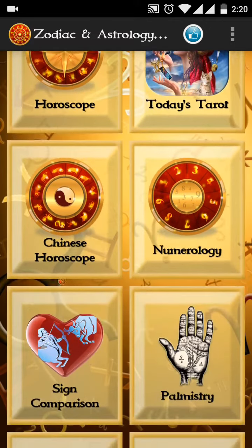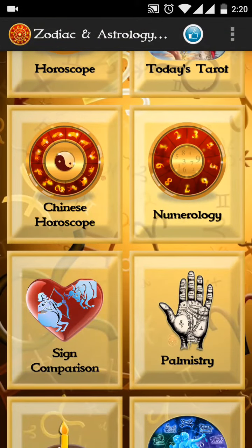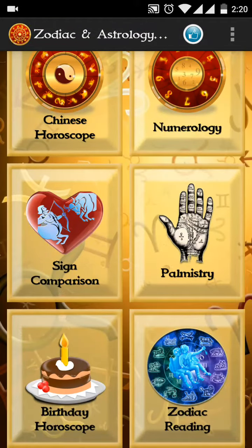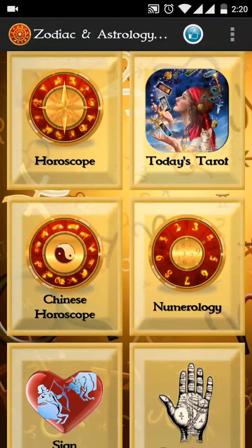There are a lot of features in this app: we have horoscope which is daily, weekly, monthly, and yearly, depending on the 12 different zodiac signs. We have tarot card reading where you can select one tarot card every day. We have Chinese horoscope, numerology, sign comparison where you can compare your sign with your partner's sign and see how compatible you are. We have palm reading, birthday horoscope, and general zodiac reading where you can read about your personality, character, and relationships depending on your zodiac sign.